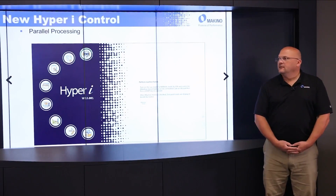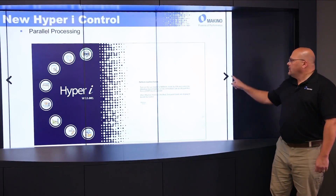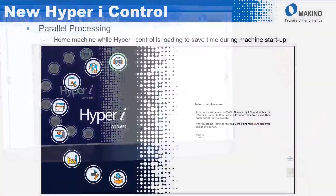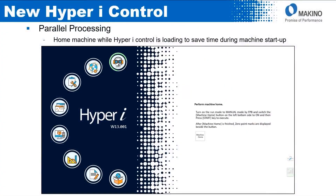When you're booting up the machine, we have parallel processing. When the machine is booting up, this boot screen will come up, and once it gets to a certain point in the boot process, you're able to home the machine without waiting for the complete boot of the Hyper-I control. So it saves you time during startup.